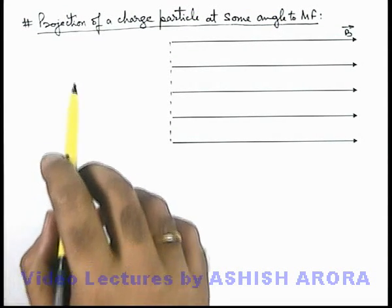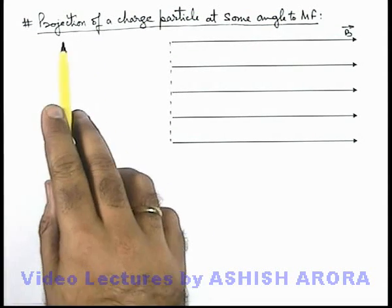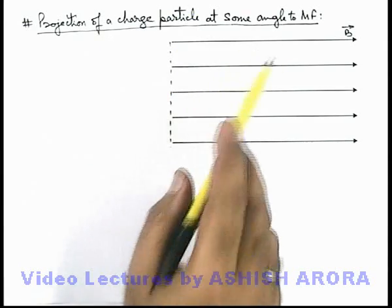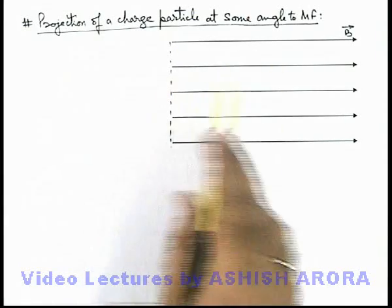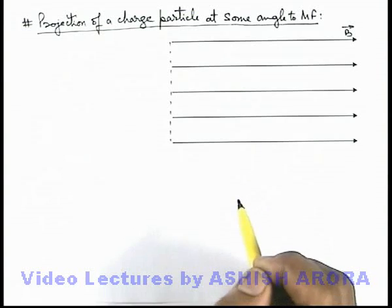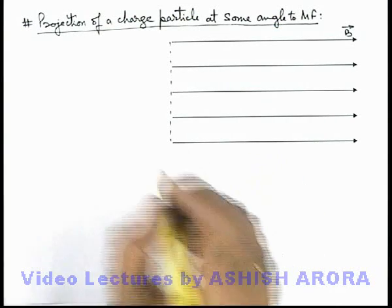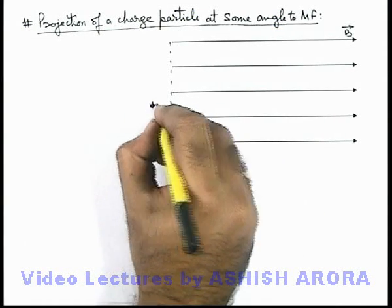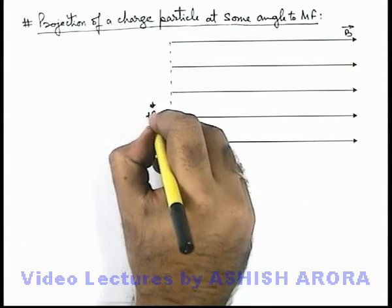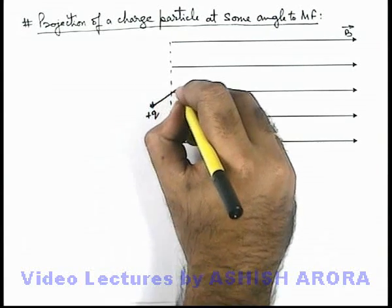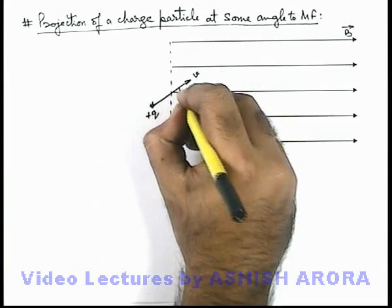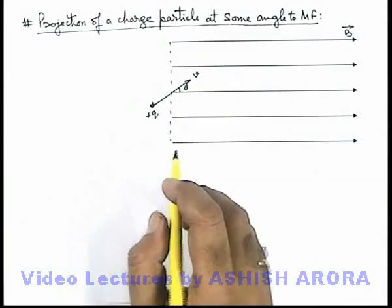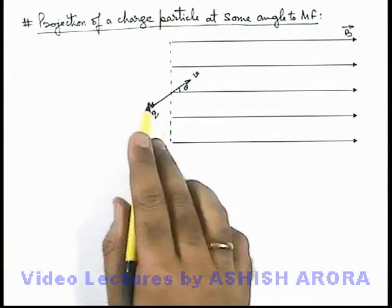Let us study the situation of projection of a charged particle at some angle to a magnetic field. These are the magnetic lines of force of a uniform magnetic induction B. In this region, a charge plus q is projected into the magnetic field with the velocity vector v at an angle theta to the direction of magnetic induction.